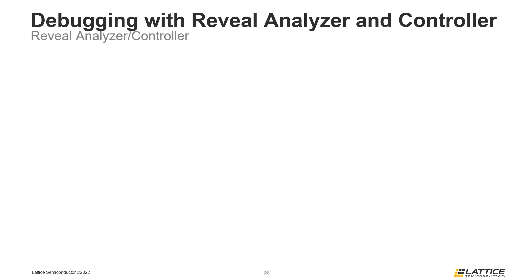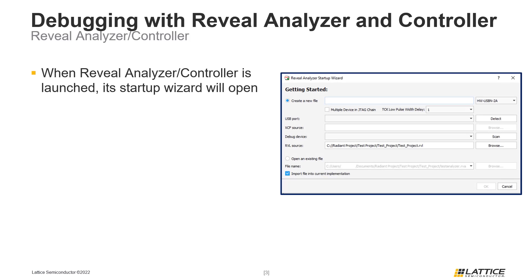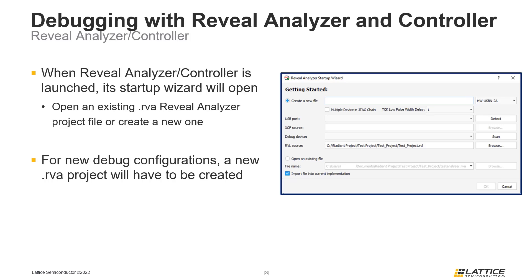Once Reveal Analyzer has been launched, its startup window will appear, as seen in the figure on the slide. The Reveal Analyzer startup wizard can be used to create a new RVA file or open an existing one. To create a new Reveal Analyzer project file, select the option called 'Create a New File' and define the file name in the field next to this option.